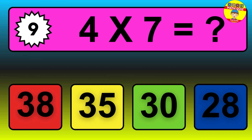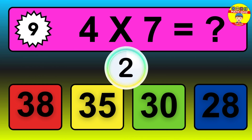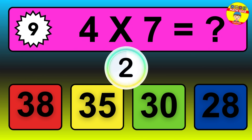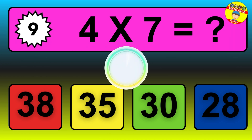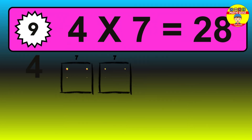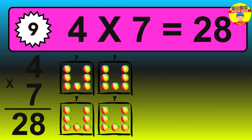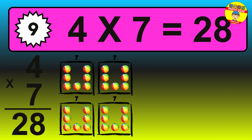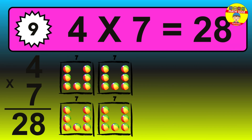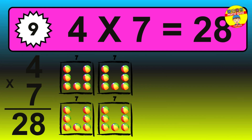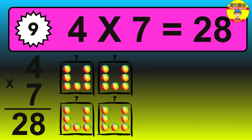Question 9. 4 times 7 equals what? The answer is 4 times 7 is 28. To calculate, we have 4 groups with 7 balls each one. So, how many balls do we have? 28 balls.